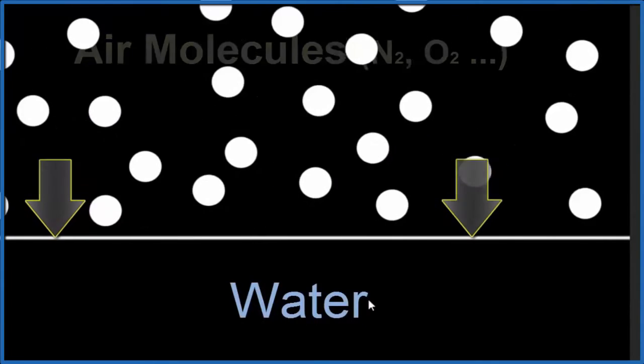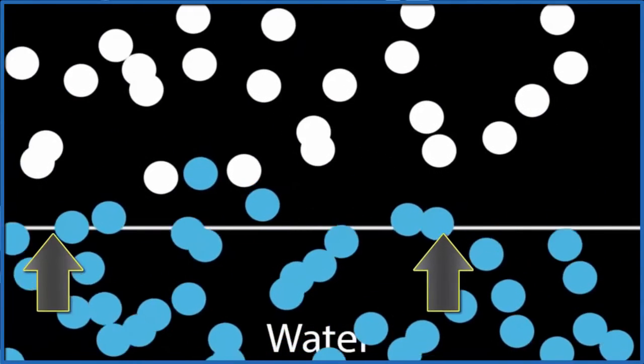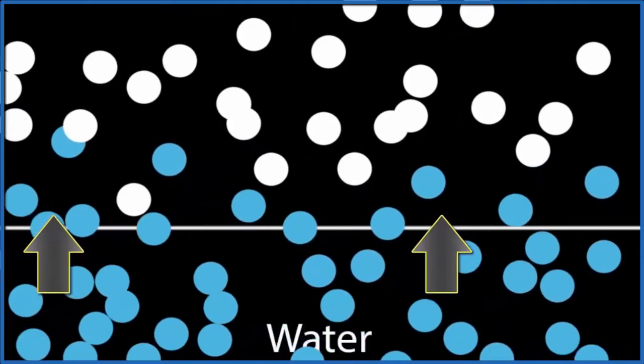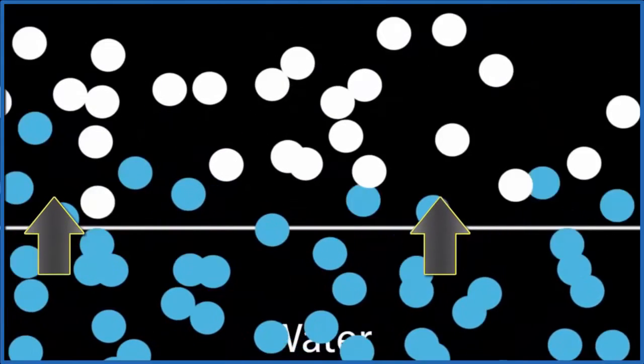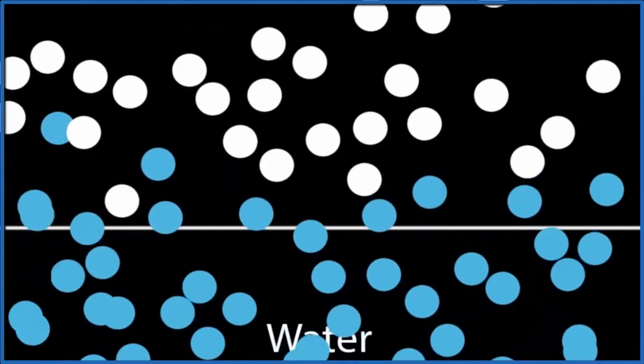The more collisions, the greater the pressure. But water molecules can create pressure when they leave the liquid. As these faster-moving water molecules escape, they collide with the molecules of air. This creates pressure, and we call it vapor pressure.